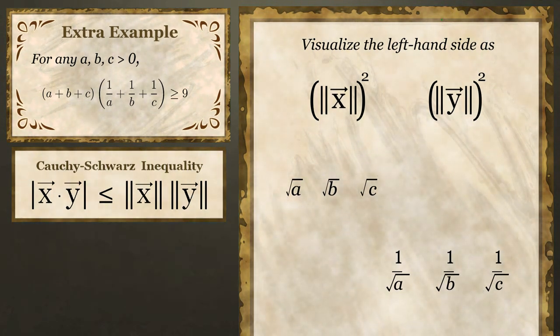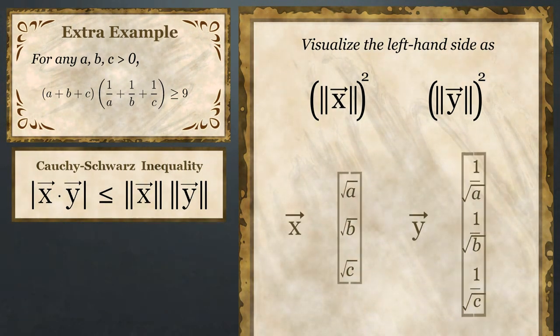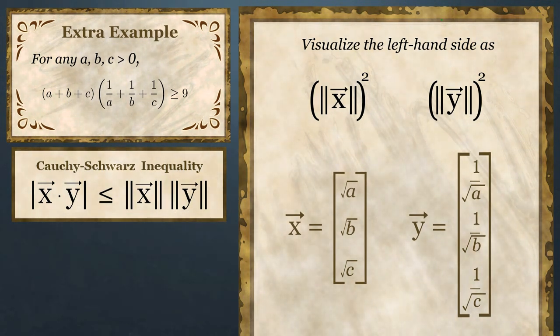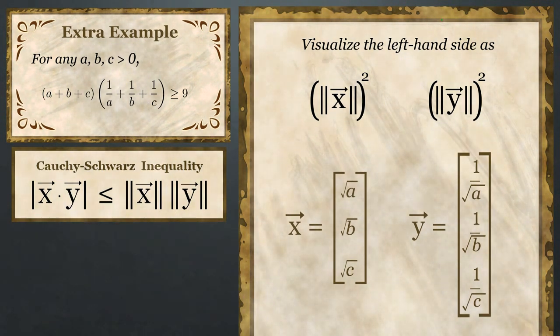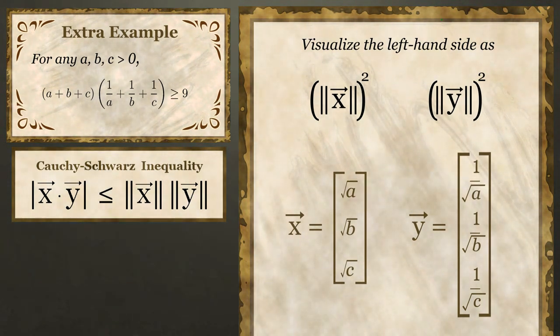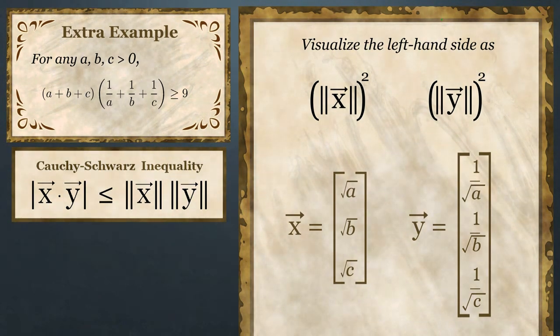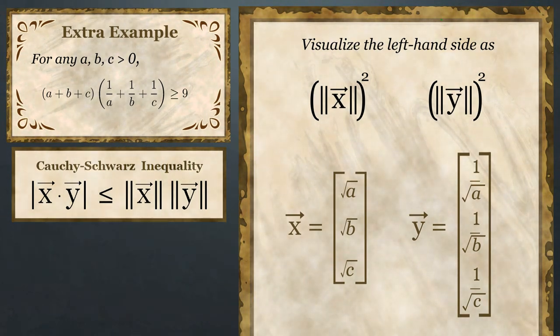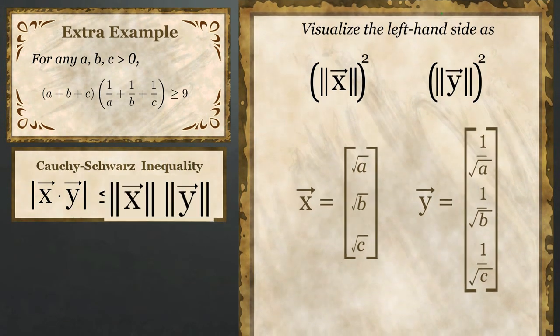This observation inspires us to choose x equals square root of a, square root of b, square root of c and y equals 1 over square root of a, 1 over square root of b and 1 over square root of c.